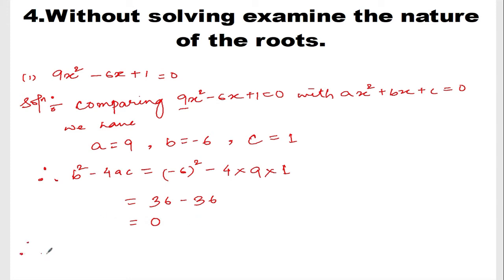Now, therefore, since b squared minus 4ac is equal to 0, when b squared minus 4ac is equal to 0, what is the nature of the roots? So the roots will be real and equal. It will be real and equal.